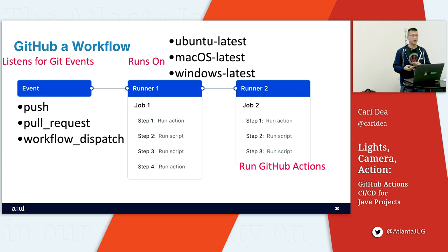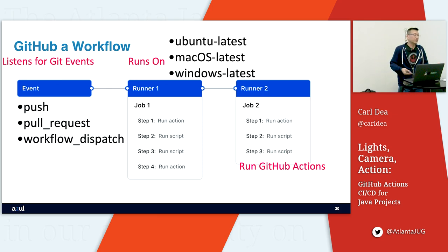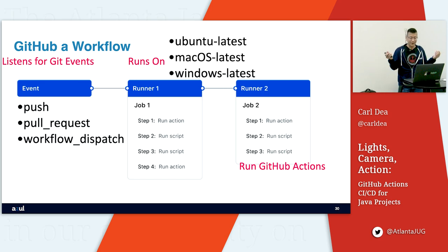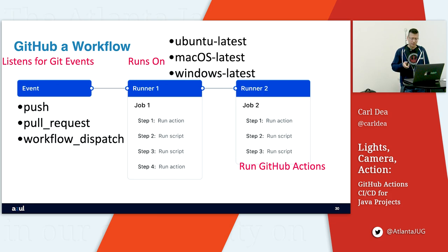Those are the only two things you can do in steps, but it's great. With scripts, you can run bash commands — you can do anything, like a simple echo or run another script. The main important thing is GitHub Actions themselves — we'll talk about the marketplace in a minute.